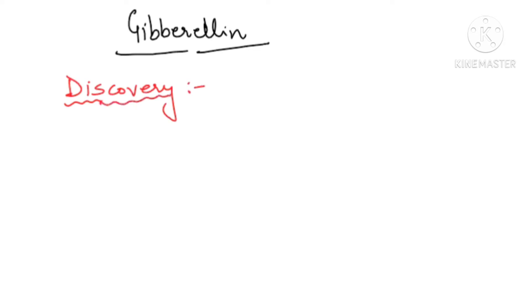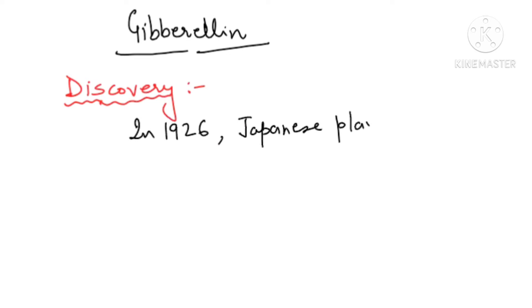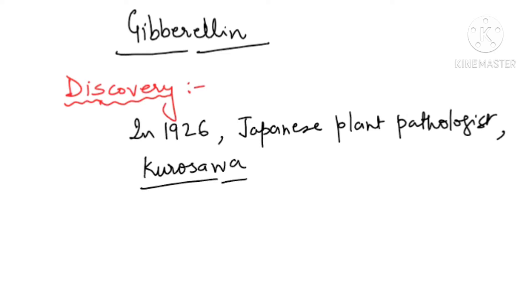First of all, Gibberellic acid was discovered in 1926 by one Japanese plant pathologist. That pathologist was Kurosawa. What he observed was that he was working on the rice field, and while working on the rice field, some rice seedlings were growing taller than the others.